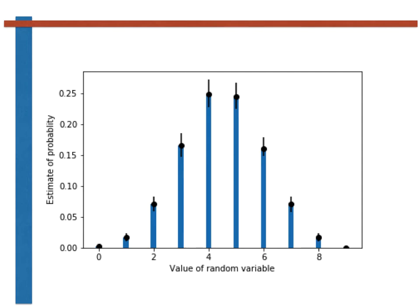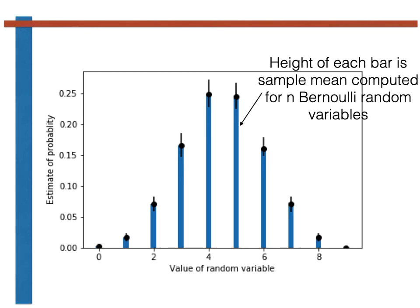It should not surprise you to learn that you can calculate the error bars for histograms in this way. The first step in doing so is to recognize that the height of each of the bars in the histogram is an average that is computed by adding together n Bernoulli random variables.